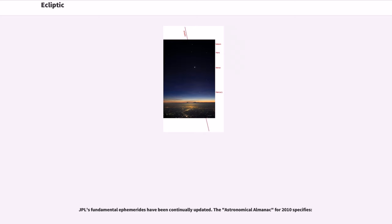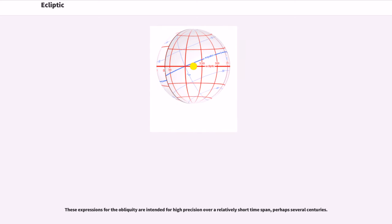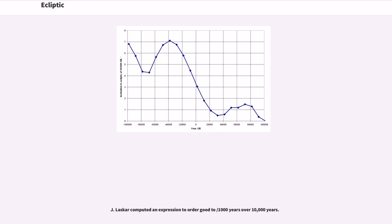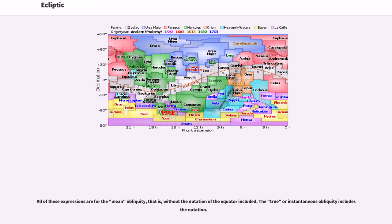JPL's fundamental ephemerides have been continually updated. The Astronomical Almanac for 2010 specifies these expressions for the obliquity are intended for high precision over a relatively short time span, perhaps several centuries. J. Laskar computed an expression to order T^10 good to 0.02 arcseconds over 1000 years and 0.1 arcseconds over 10,000 years. All of these expressions are for the mean obliquity, that is, without the nutation of the equator included. The true or instantaneous obliquity includes the nutation.